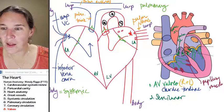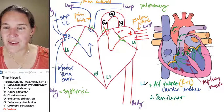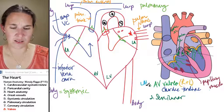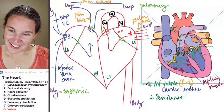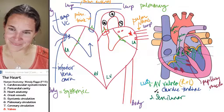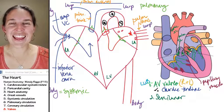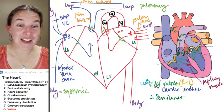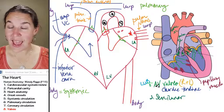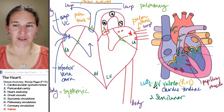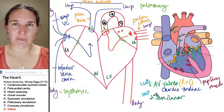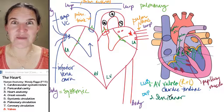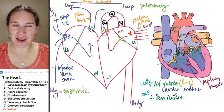The lub comes from your AV valves snap shut and you hear lub. And the dub or dup comes from the snapping shut of the semilunar valves.